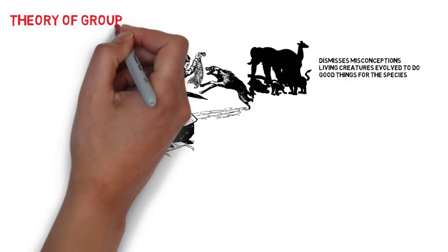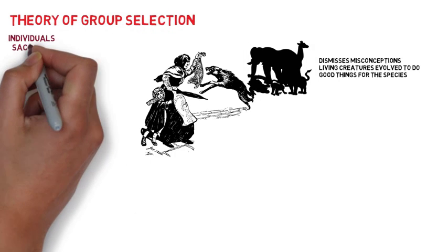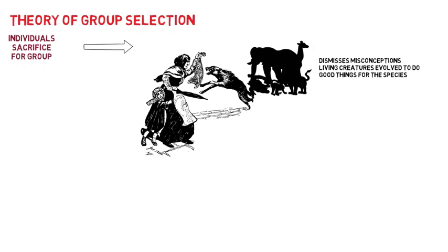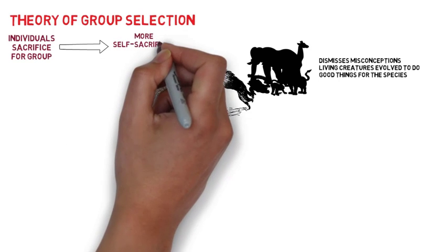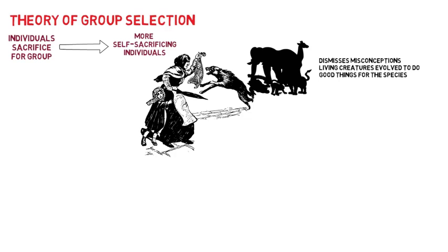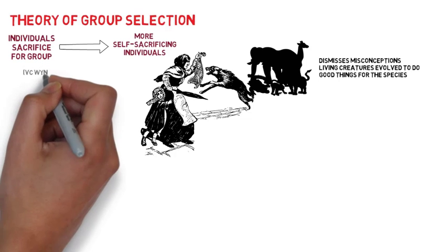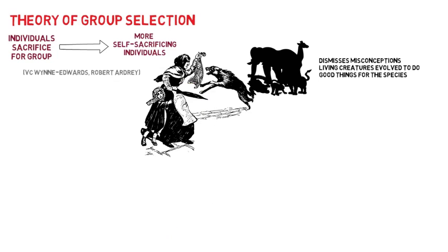Theories of group selection state that individual members prepared to sacrifice themselves for the welfare of the group means that the world will be more populated by groups composed of self-sacrificing individuals. These group selection theories have been popularized by V.C. Wynne-Edwards and Robert Ardrey, among others.